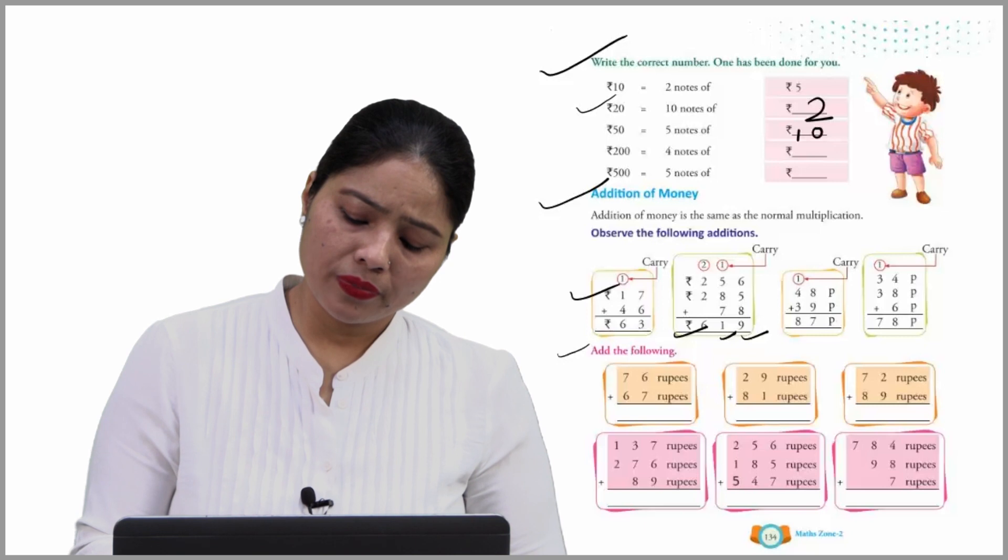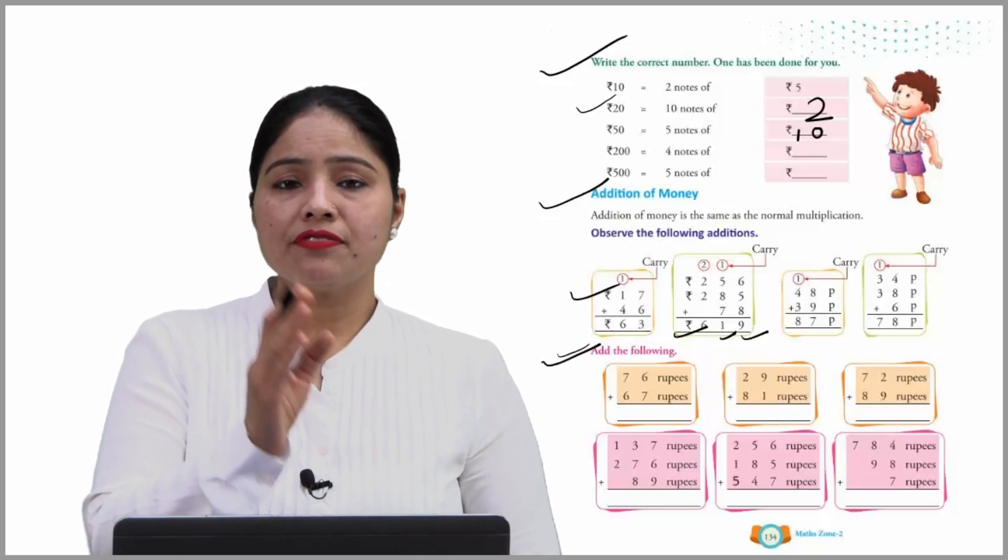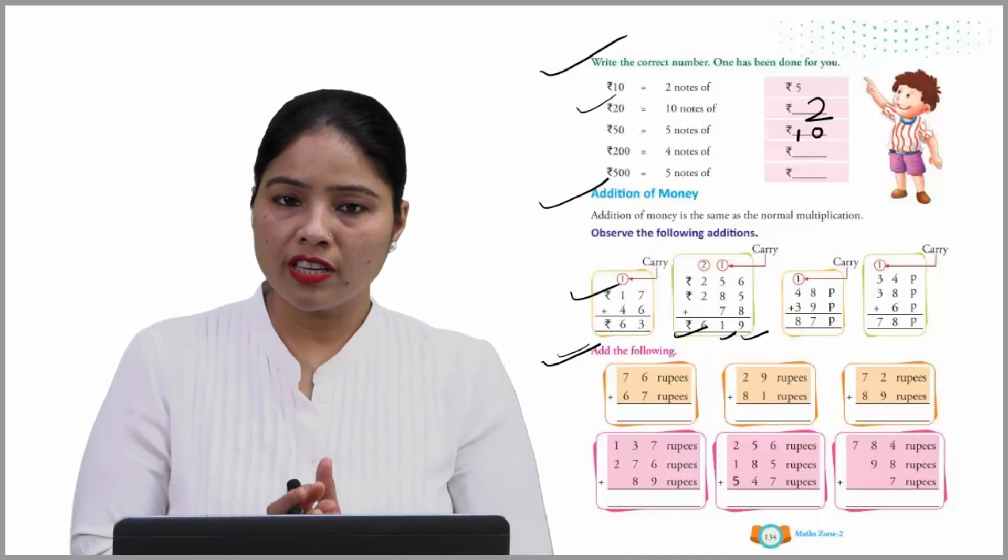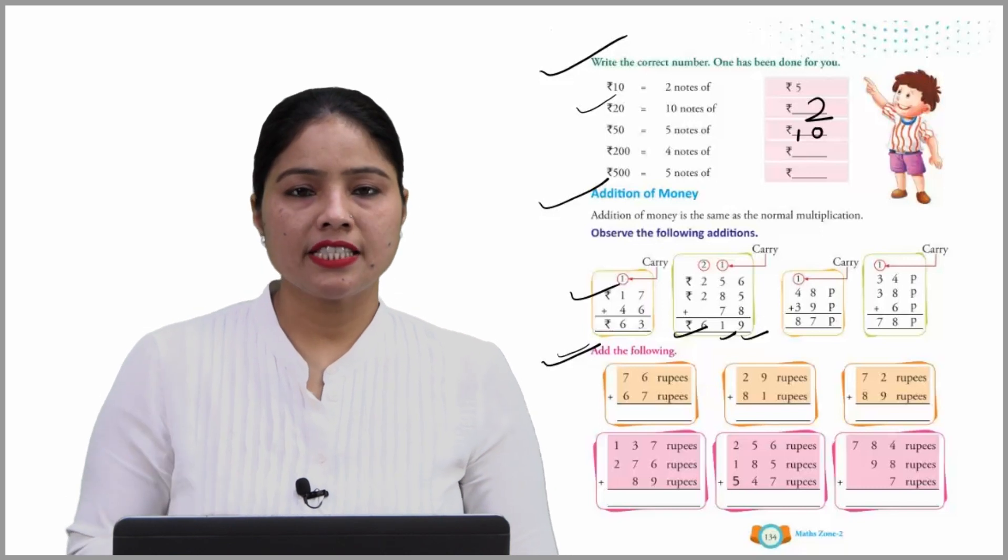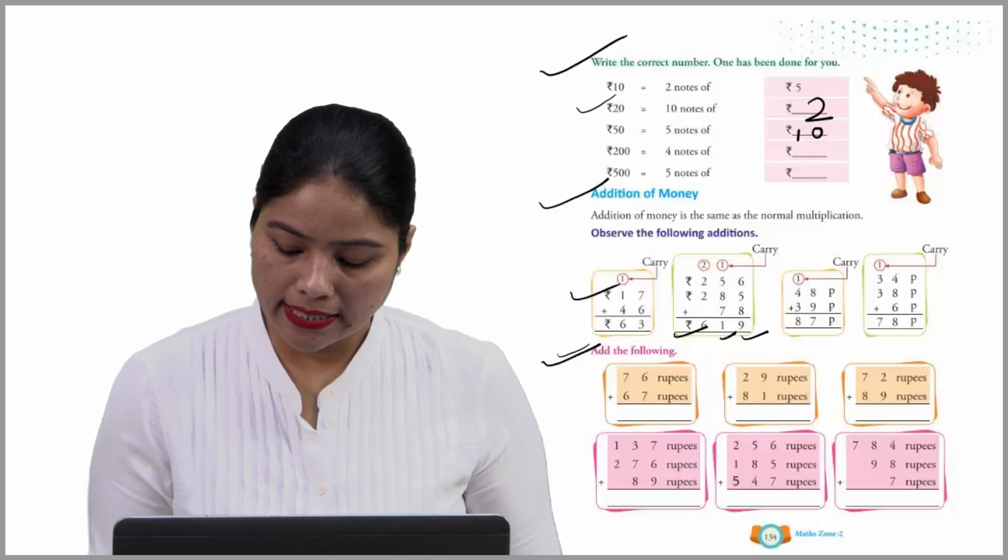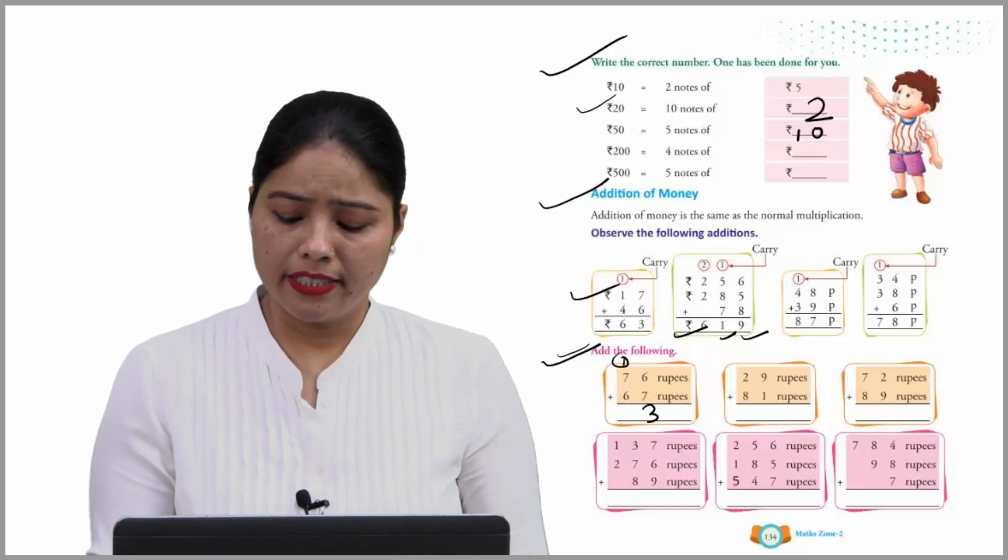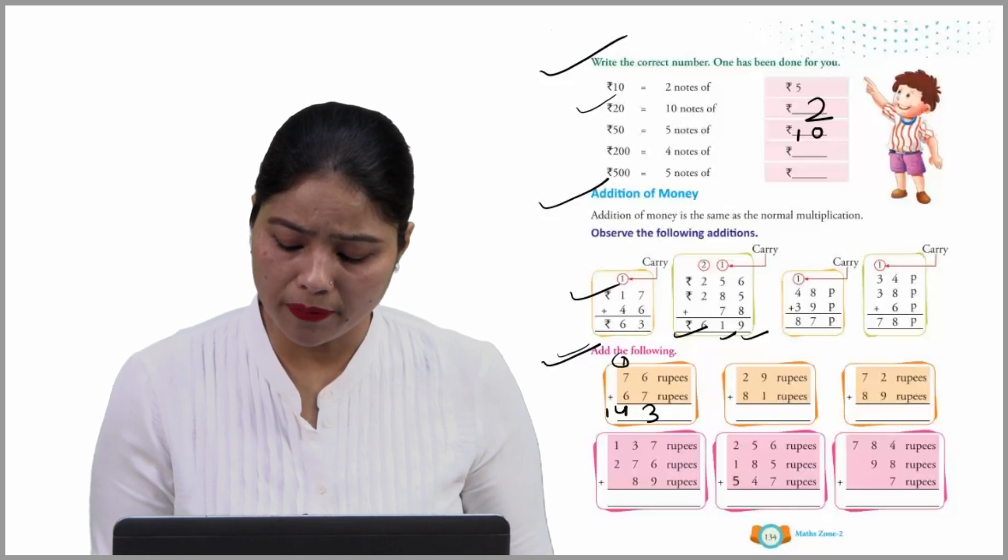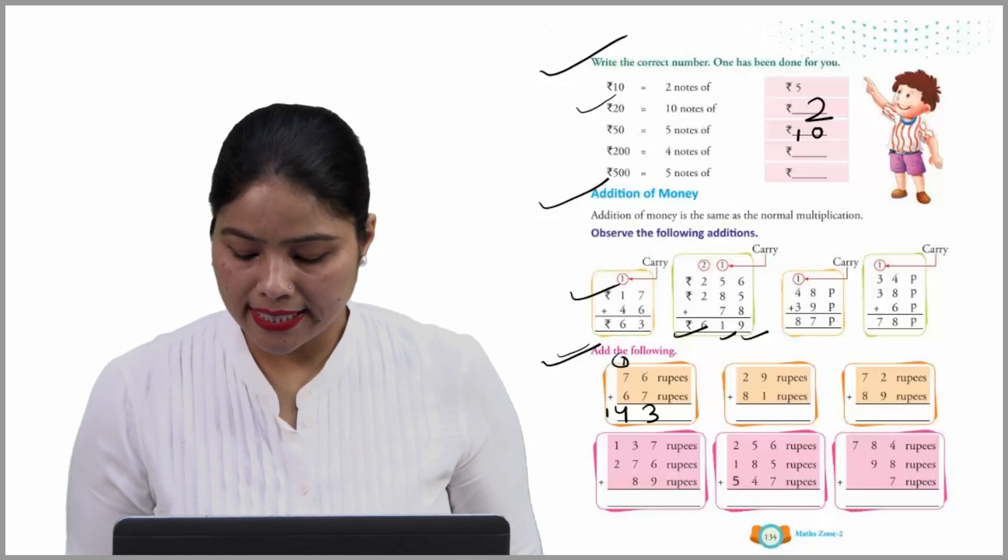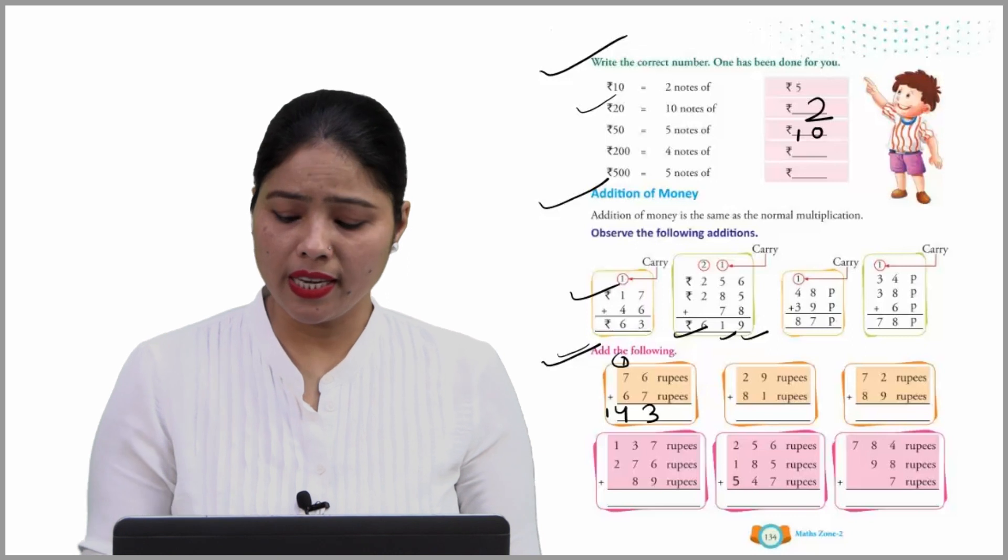Now add the following. We have 76 rupees plus 67 rupees. Start with one's place. 6 and 7 - 6 plus 7 is 13. Write 3, carry 1. And these are 14. How? 6 plus 1 is 7, plus 7 is 14. So we can say that 143 rupees.